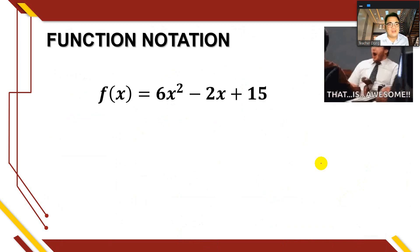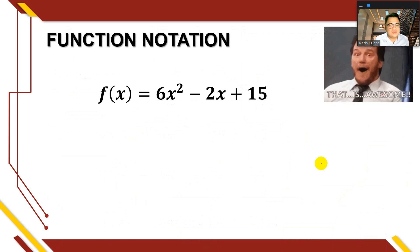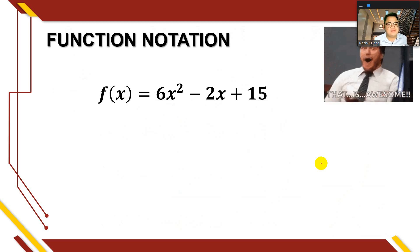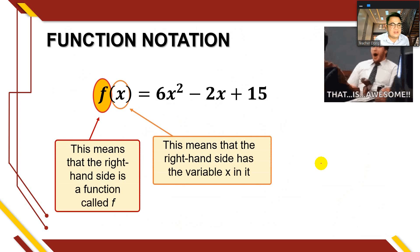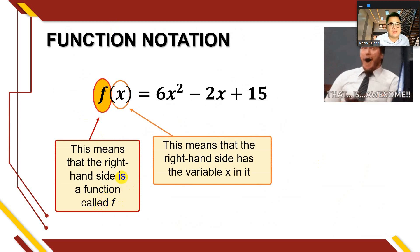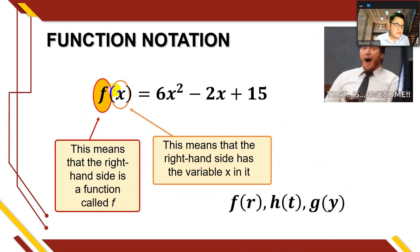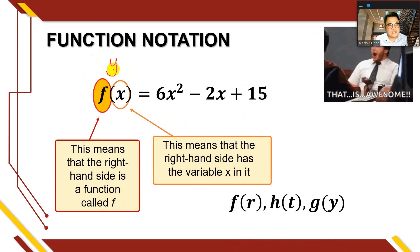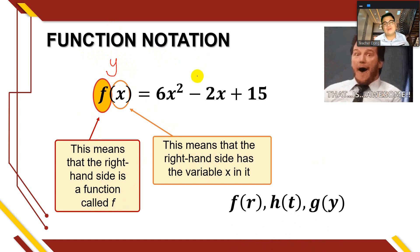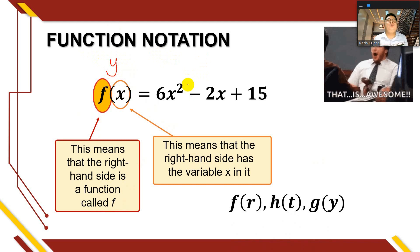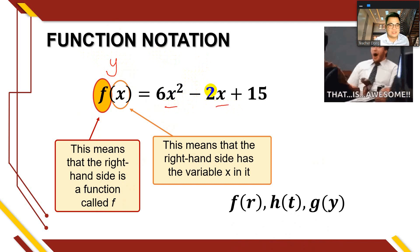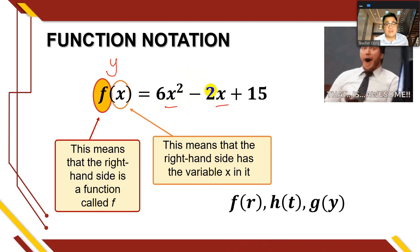For function notation: f(x) = 6x² - 2x + 15. Here, f means the right-hand side is a function called f, and x means the right-hand side contains the variable x. You can also use other letters like r, t, or y instead of x. Remember that f(x) is also the range or value of the function — you cannot solve for the range without substituting a value of x.